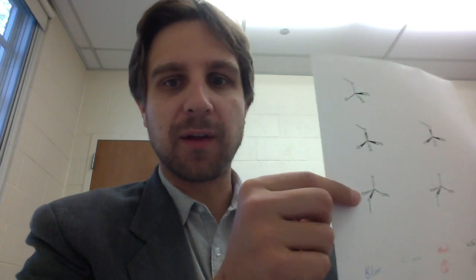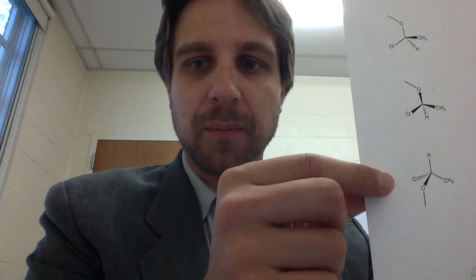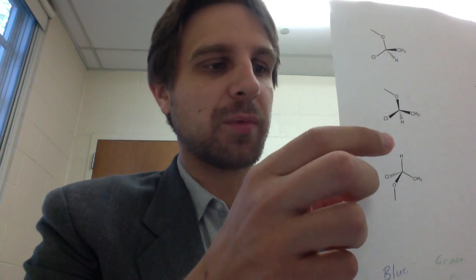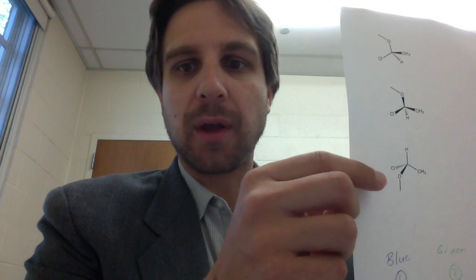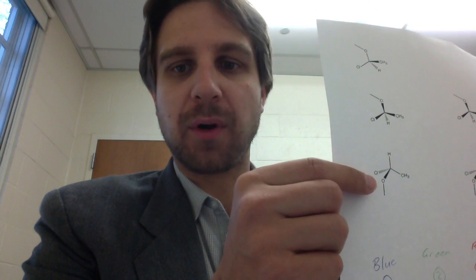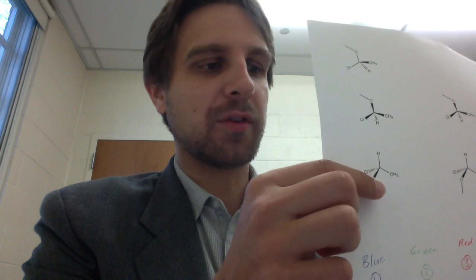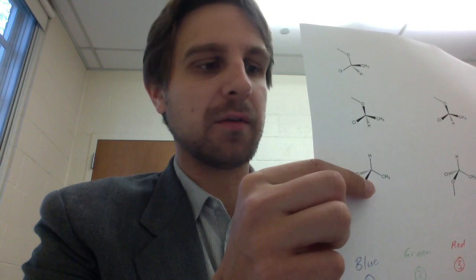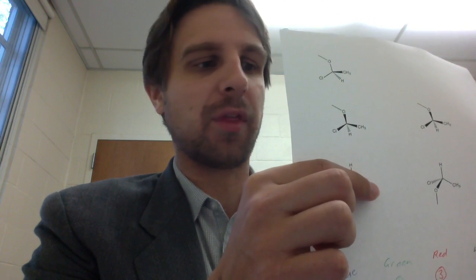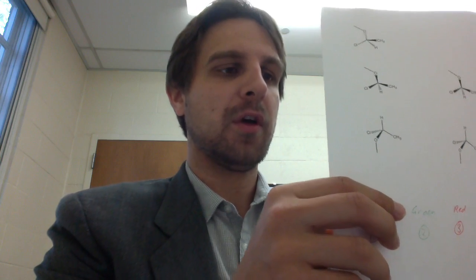So for instance, let's say we want to define the stereochemistry of this molecule here. Hydrogen is the lowest priority group. Chlorine is the highest priority group. Oxygen is the second highest priority group, and the methyl group is the third highest priority group.